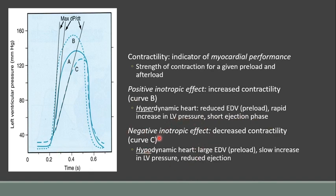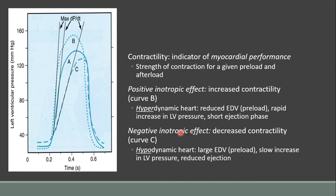We have the opposite for negative inotropic effects — a hypodynamic heart, where we're going to get a larger preload because the heart is not ejecting as much blood. On the next beat, we're going to have more left over in the left ventricle, therefore a larger end diastolic volume and a larger preload. It's sort of beat by beat — one beat will affect the next beat. A slower increase in left ventricular pressure is depicted by the slope of the curve, and there is also a reduced ejection, meaning less blood is ejected from the left ventricle.